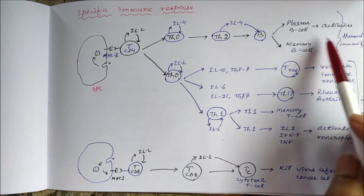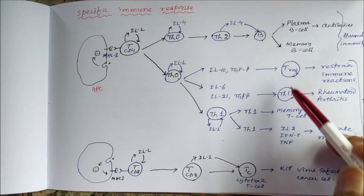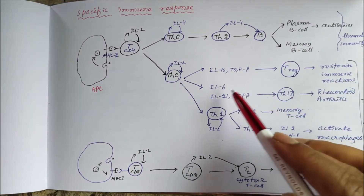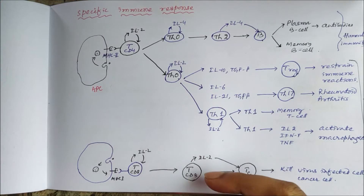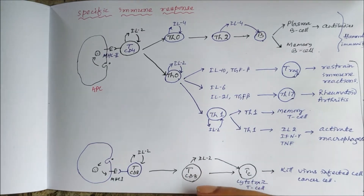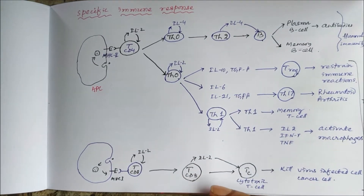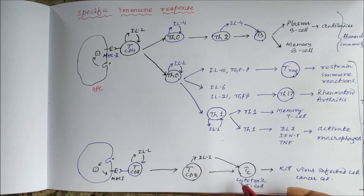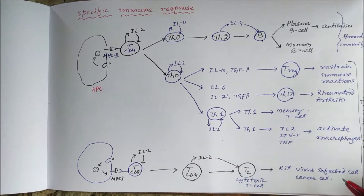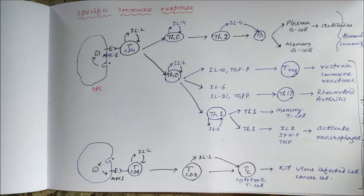Humoral immunity occurs through antibodies, and cellular immunity occurs through cytokines. When there is interaction between MHC class I and CD8 T lymphocytes, there will be formation of cytotoxic T cells, which will kill the infected cell.